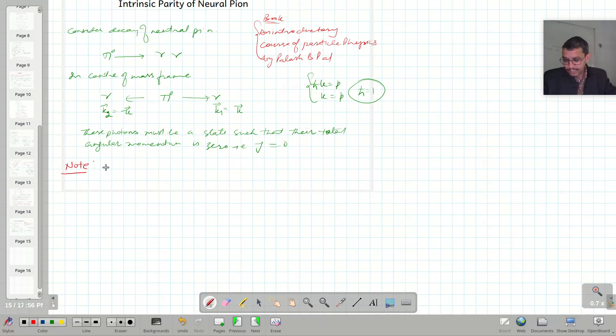That to construct a state with 0 angular momentum, J equals 0, the wave function must be scalar.